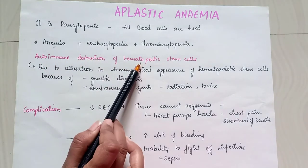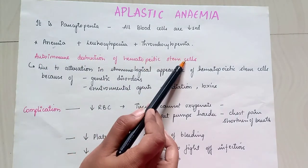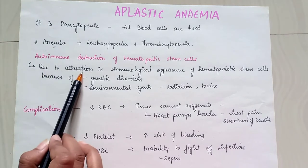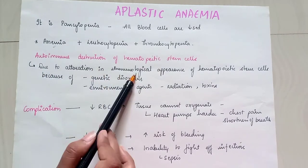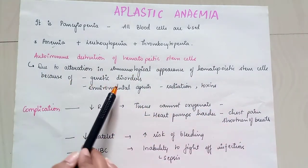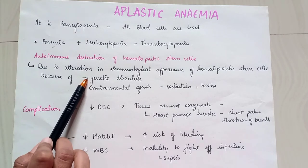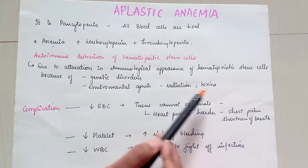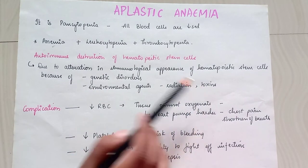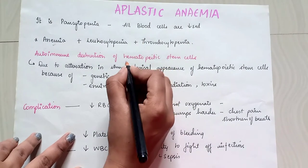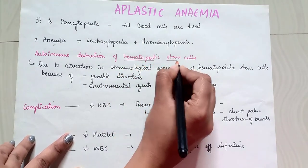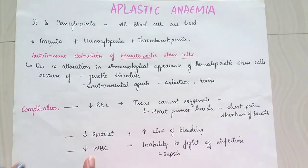Aplastic anemia involves autoimmune destruction of hematopoietic stem cells. This is due to an alteration in the immunological appearance of hematopoietic stem cells because of genetic disorders, environmental agents, radiation toxins, etc. So mainly it is destruction of hematopoietic stem cells.